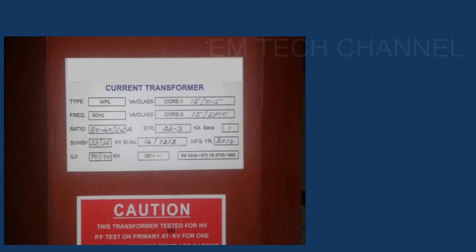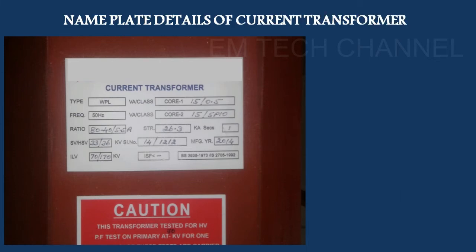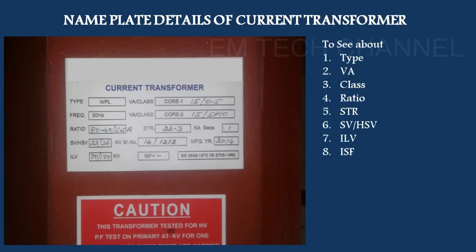First, we will check the type. The basic nameplate parameters are: VNN, Class, Ratio, SDR, SV, RH, ILV, ISF. This is the current transformer nameplate, so you can see all the parameters. We also need to cover the frequency of the current transformer. This is based on the Indian standard method — these are the standard parameters of the current transformer.